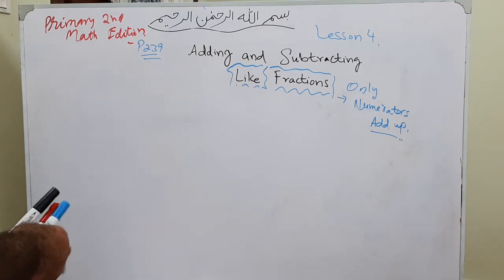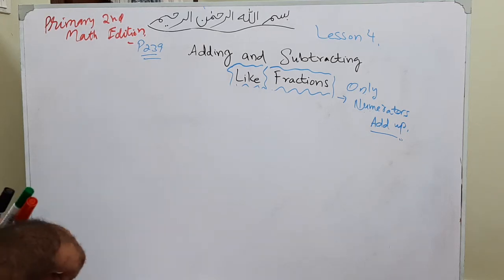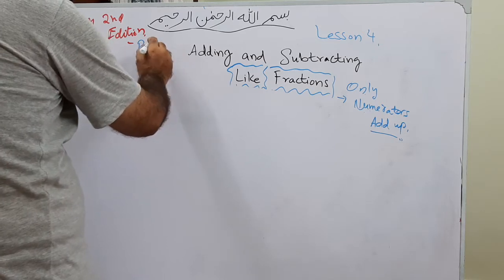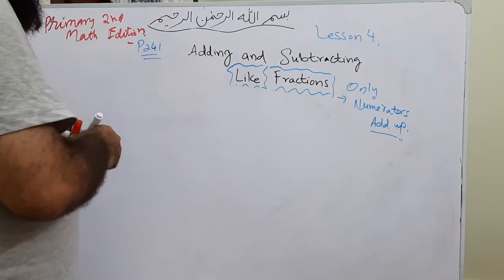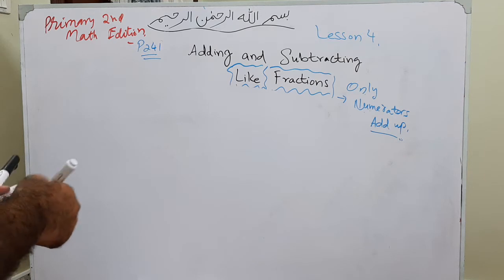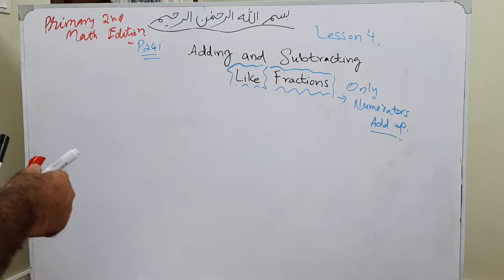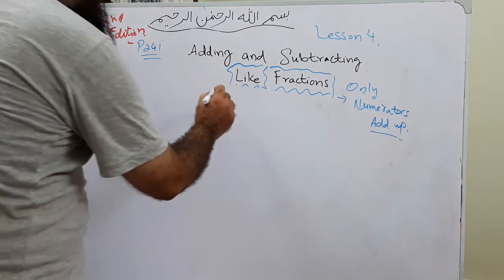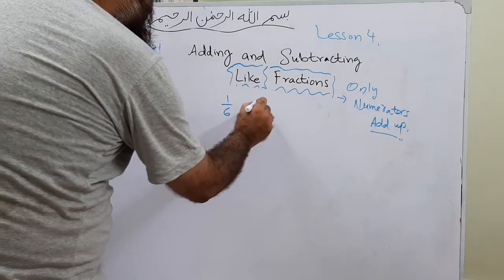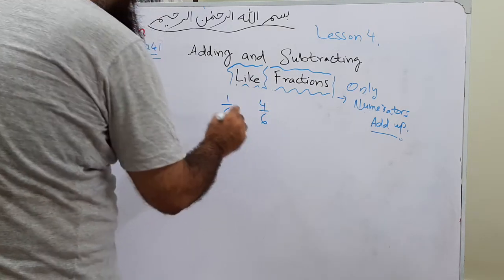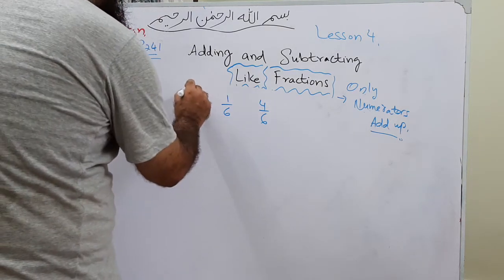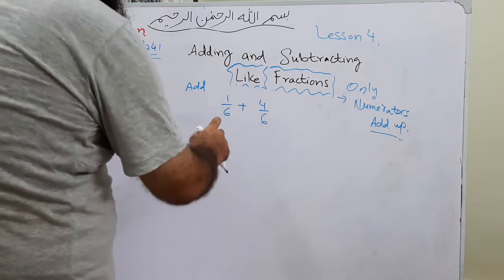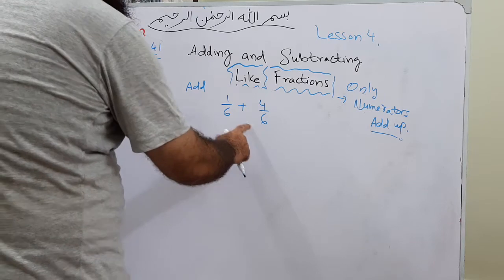Now we'll be going to page number 241, the same adding and subtracting like fractions. Part a is that we need to add 1 over 6 and 4 over 6. We'll put a plus sign here. We know that the denominators are the same, so these are the addition of like fractions.